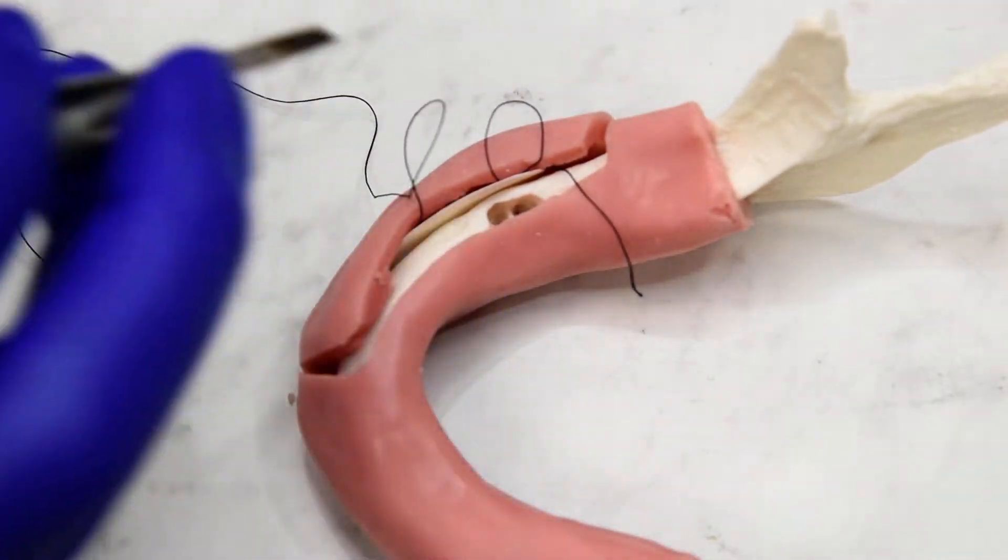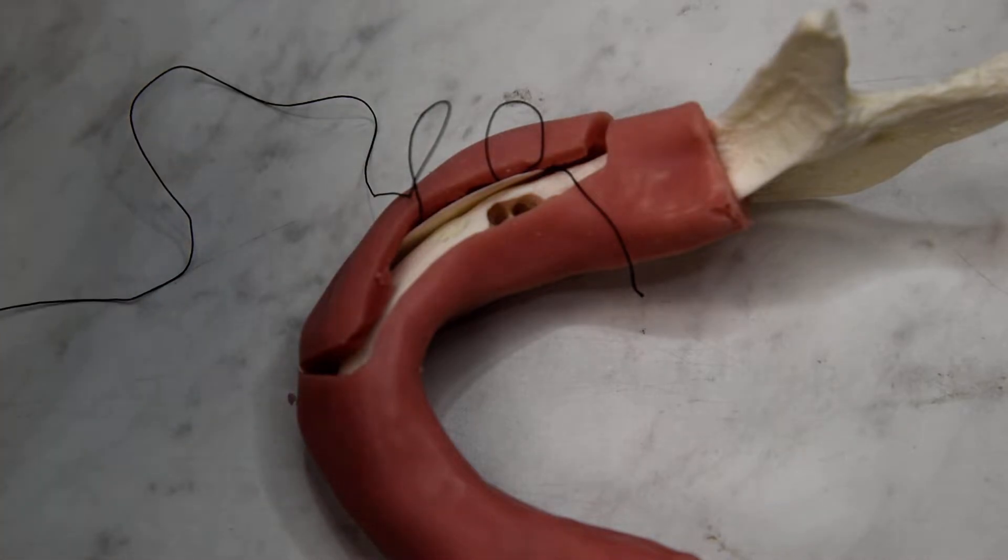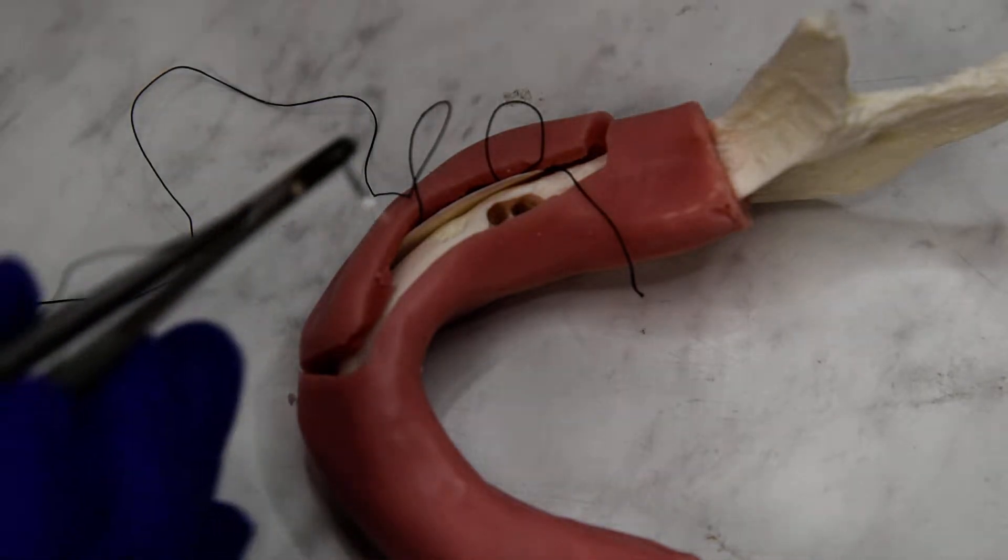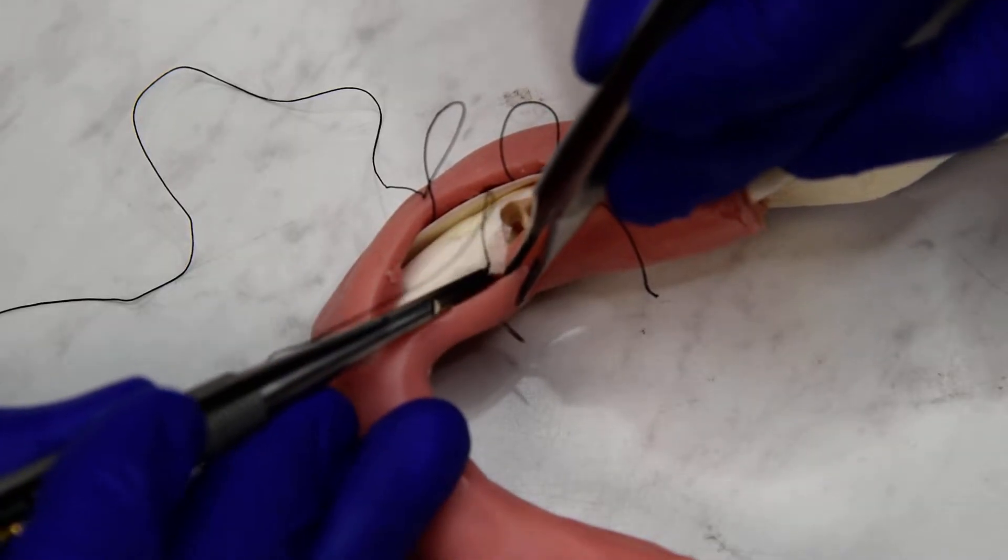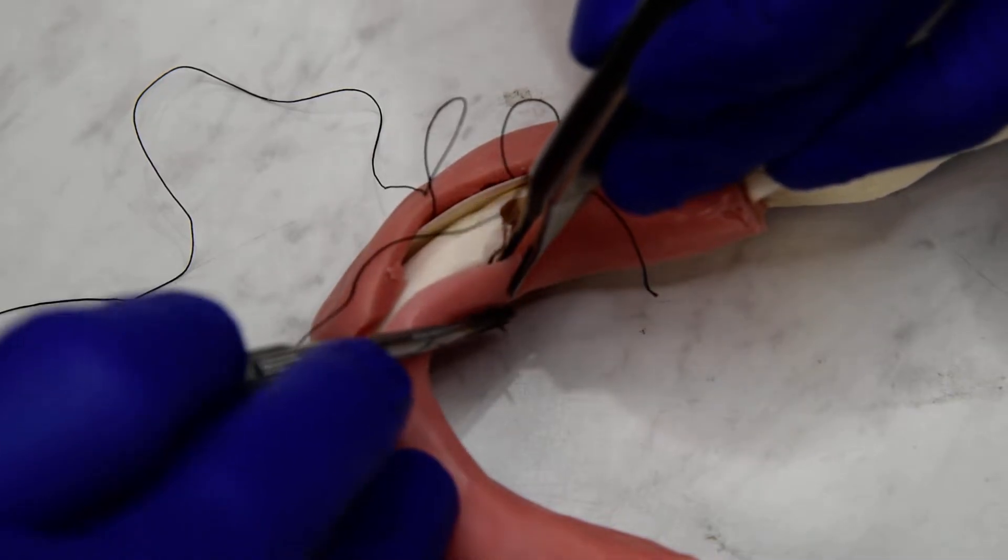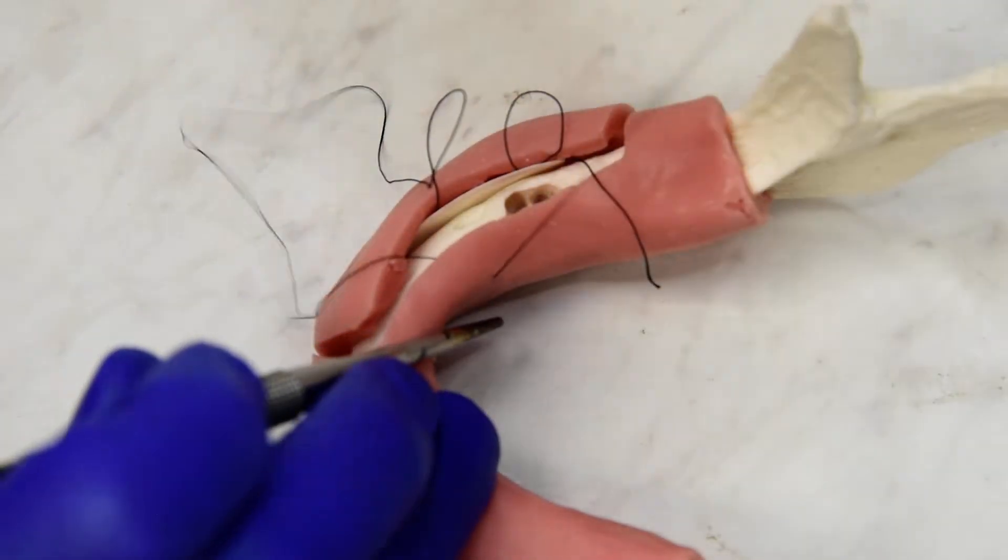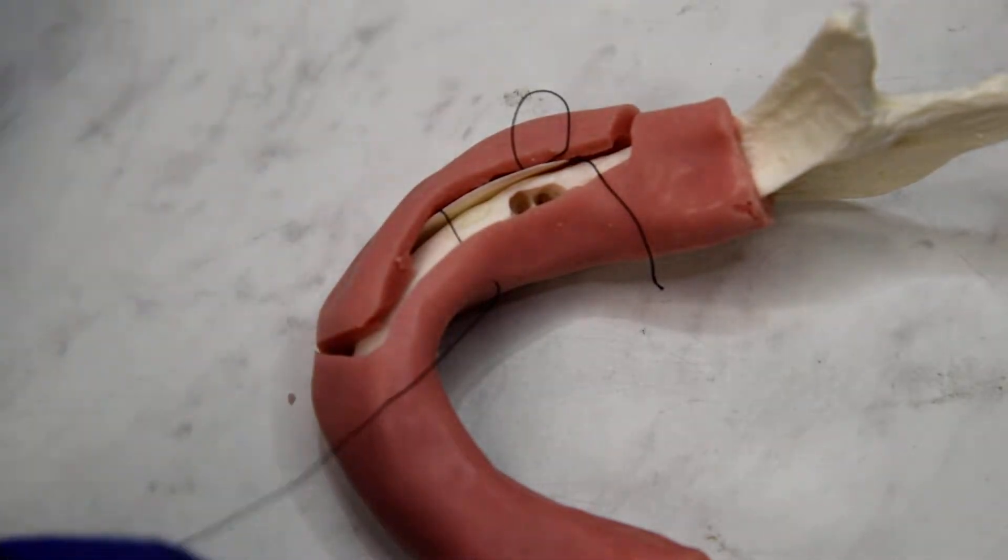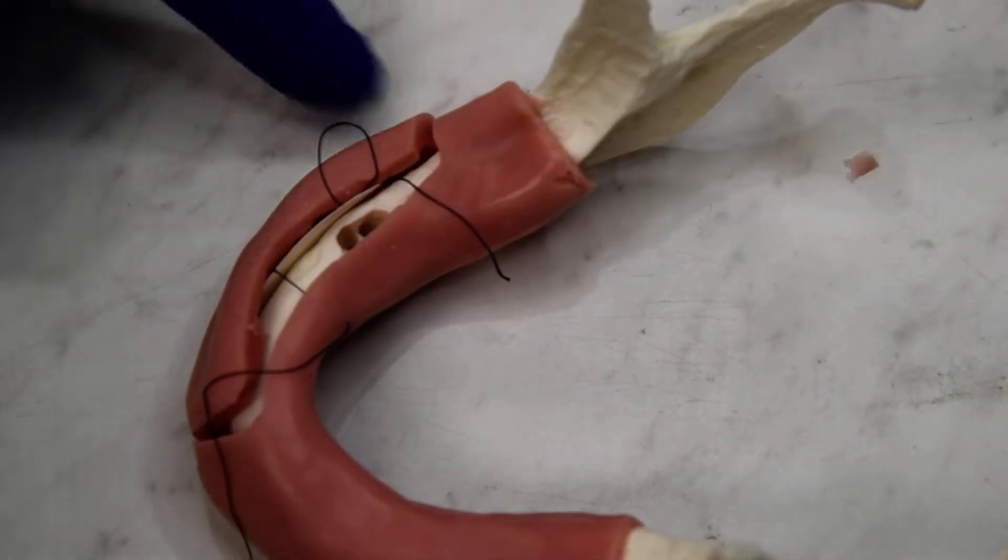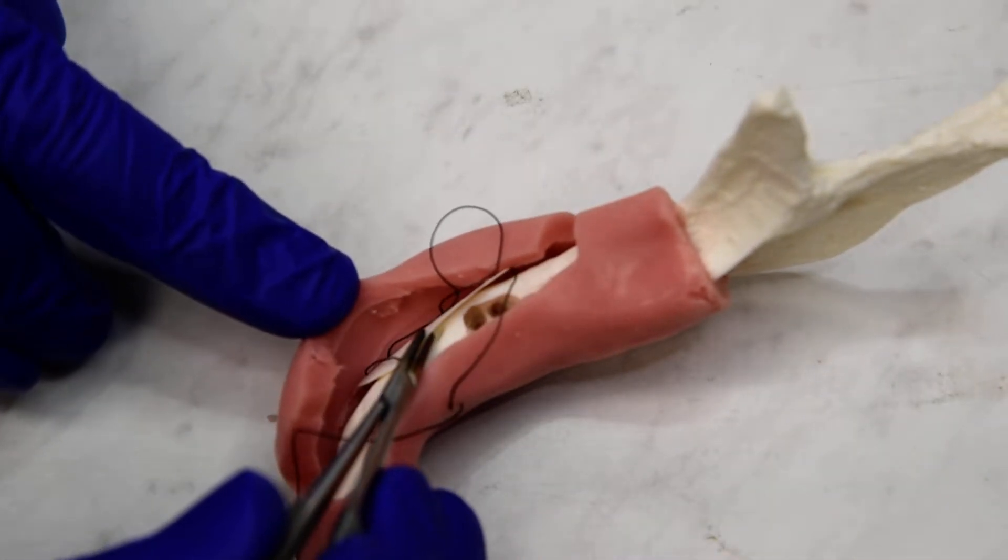And once we're happy with the position of that, then we pick up our suture again, and we exit across from the last bite out the lingual. And this is the mattress portion. So you'll see a strap will start to form over the front of our membrane.